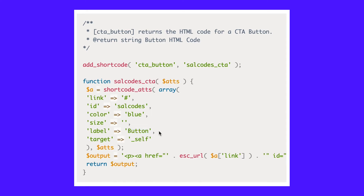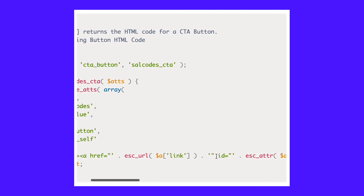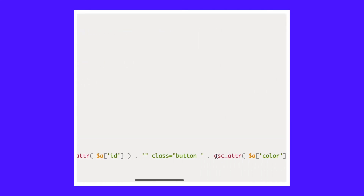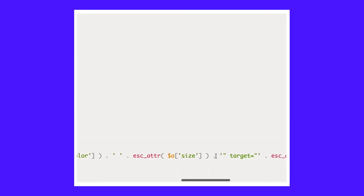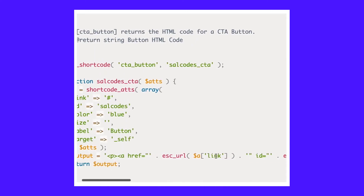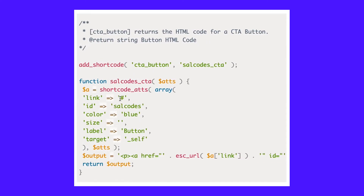Inside the shortcode handler function, we define a variable and assign it to the array returned by shortcode_atts. We assign the attributes their default values with the syntax: attribute, then default value. For example, in this code we're setting the default value of attribute label to 'button'. We can extract the values for each attribute key with the PHP syntax for arrays. The output variable stores the HTML code of the button element — the A tag with the button class — which is the string finally returned by the function. If you want to set the default link to be the site's homepage URL, you can make use of the home_url WordPress function.